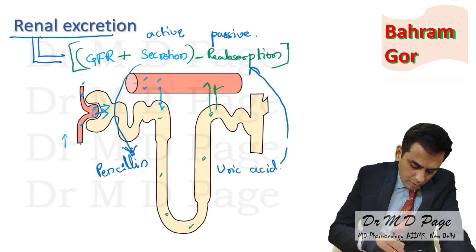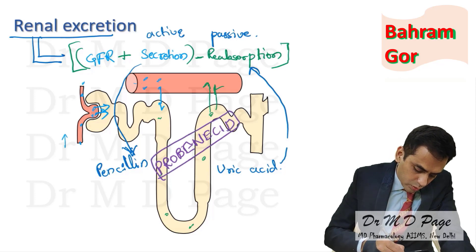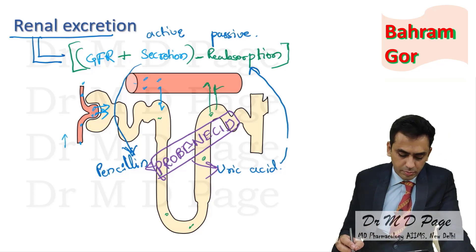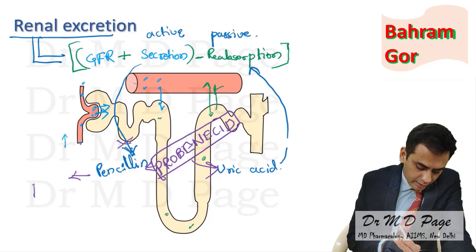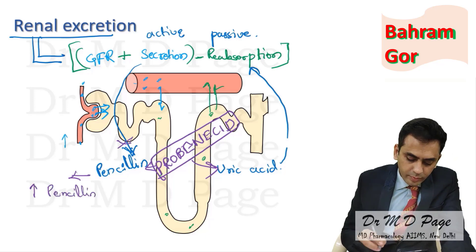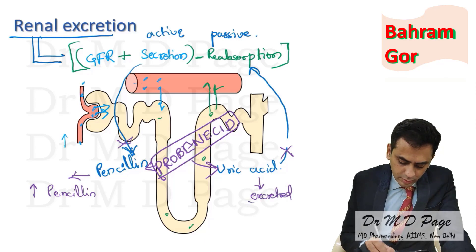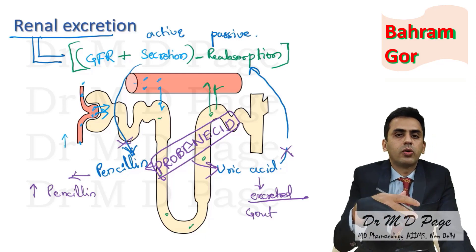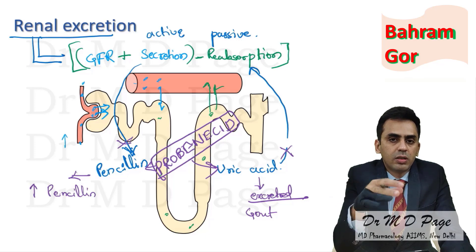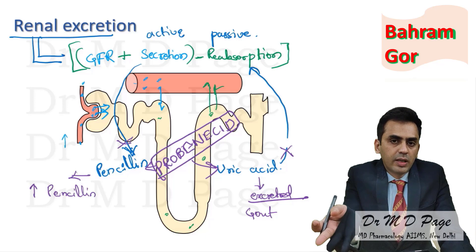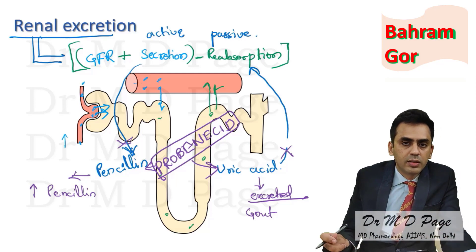Probenecid blocks the transport of both penicillin and uric acid. Penicillin is an exogenous product, so its secretion is blocked, leading to increased penicillin activity. Uric acid's reabsorption is blocked, so uric acid gets excreted — making probenecid useful in gout. So probenecid prevents penicillin secretion, prolonging penicillin's activity, and stops uric acid reabsorption, making it useful in gout.